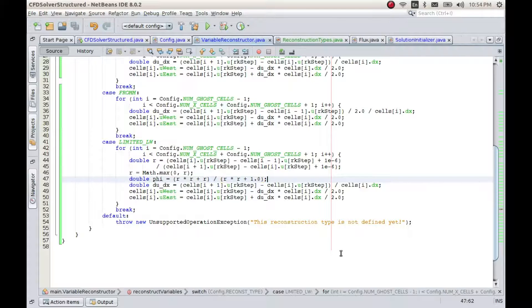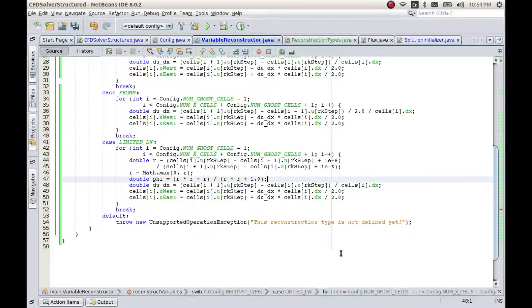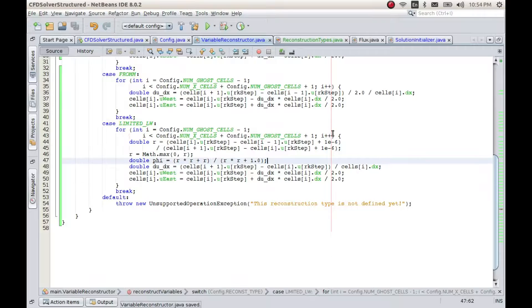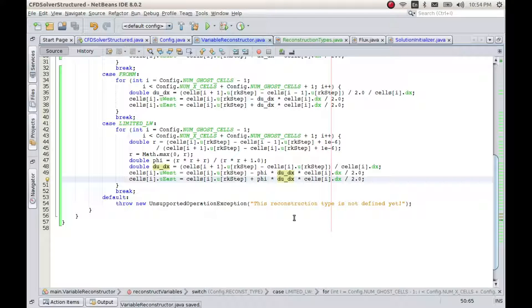That's the function for phi. Now we can use this value of phi and calculate the values at the interface by multiplying phi here and multiplying phi here. I suppose we are done with our limited Lax-Wendroff method. If we have not made any mistake, we should get a better solution compared to Lax-Wendroff and the first order method.